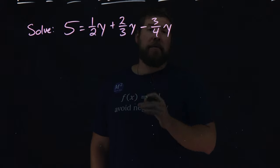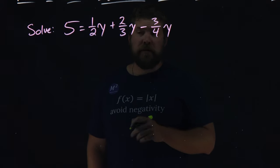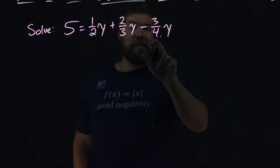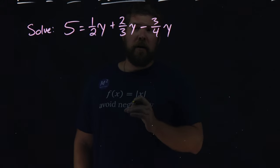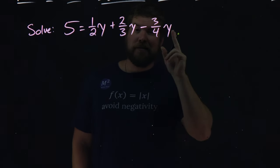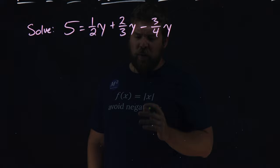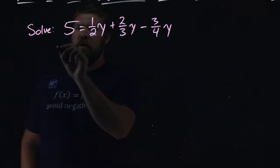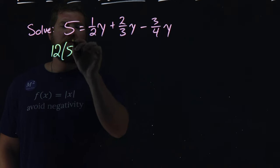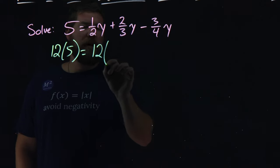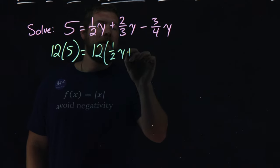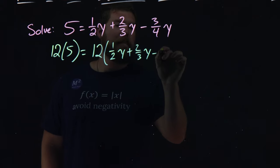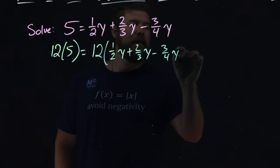We're going to find the least common denominator of our fractions. We have 2, 3, and 4. The least common denominator for 2, 3, and 4 is 12. So, I'm going to multiply 12 to both sides of the equation. We have 12 times 5 equals 12 times 1 half y plus 2 thirds y minus 3 fourths y right there.